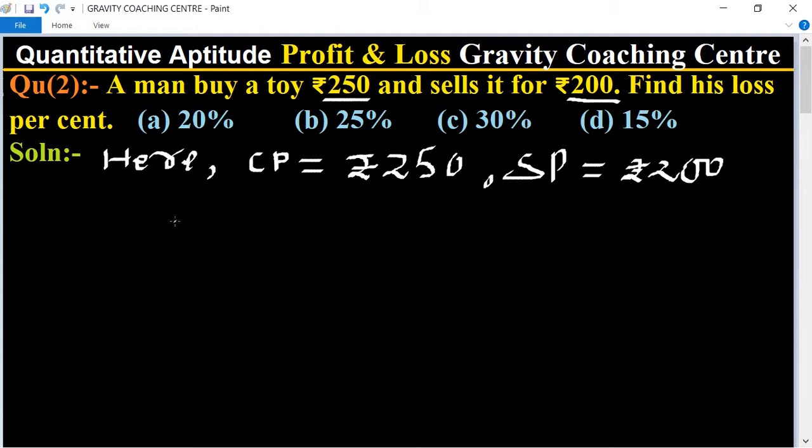Here CP is greater than SP, so loss equal to its formula is CP minus SP. 250 minus 200 equal to 50.